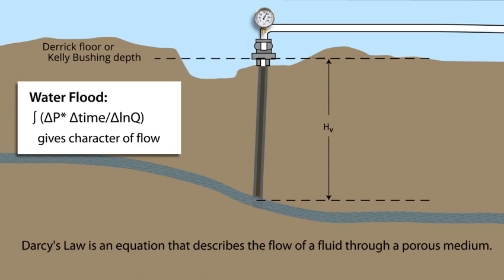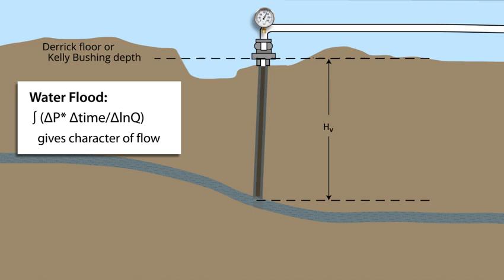Darcy's law assumes the disposal zone, or reservoir, has constant properties and that flow is radial from the well bore. Another form of Darcy's law is used in the zone of endangering influence calculations. The question of pressure difference based on elevation always arises. The model brings everything to a constant datum, or elevation, so that the difference in pressure from elevation changes is not a concern. To mimic this, we are using the lower dashed line through the injection interval as our datum.